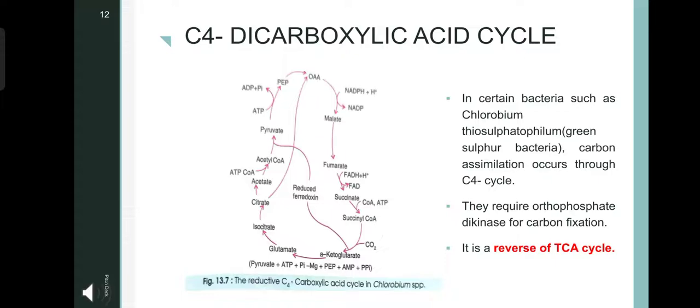C4 dicarboxylic acid cycle. In certain bacterial species such as Chlorobium thiosulfatophilum, green sulfur bacteria, the carbon assimilation occurs through C4 acid cycle. They require orthophosphate dikinase for the carbon fixation, and where the C4 dicarboxylic acid cycle is essentially a reverse of TCA or Krebs cycle.